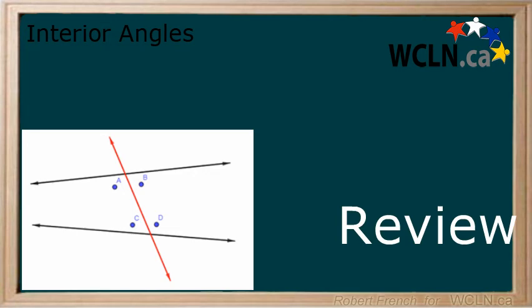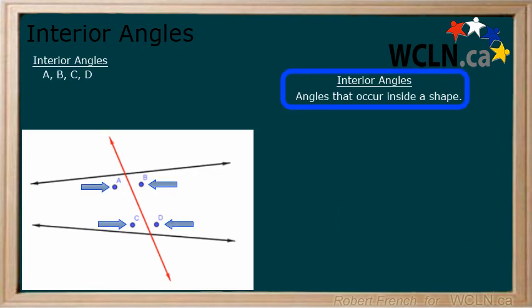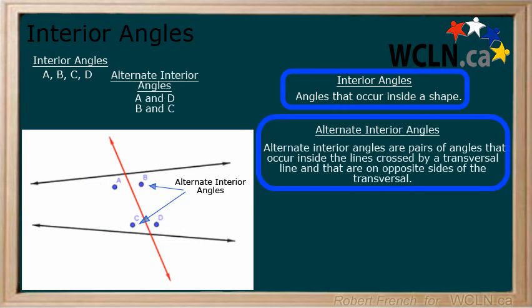In this lesson you learned about interior angles. Interior angles are angles that occur inside a shape. In our current context this means angles that occur inside two lines crossed by a transversal line. We also learned about alternate interior angles — these are pairs of angles that occur inside the lines and on opposite sides of the transversal.